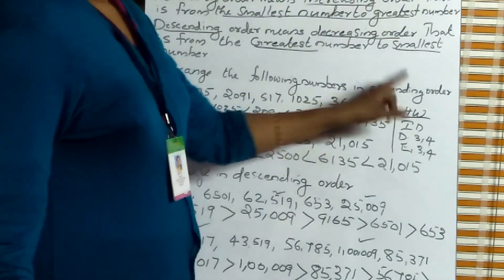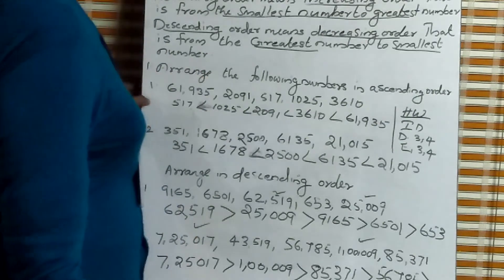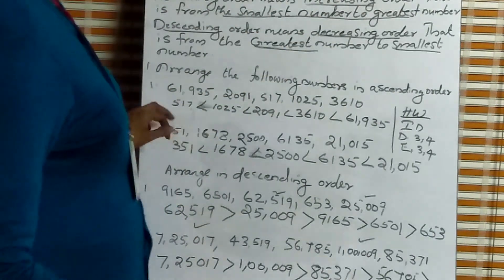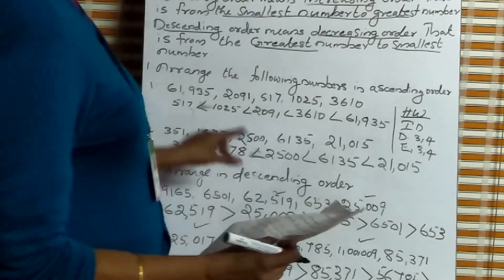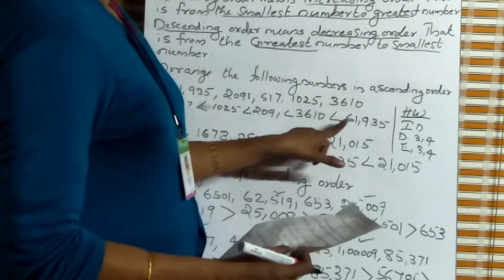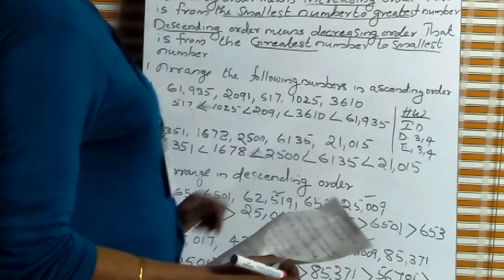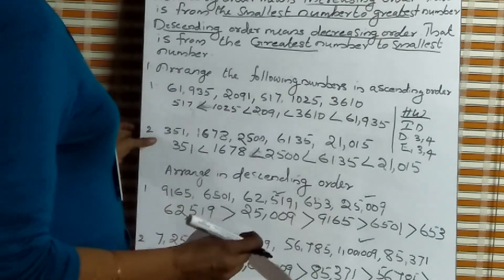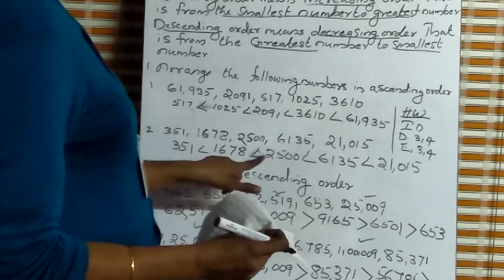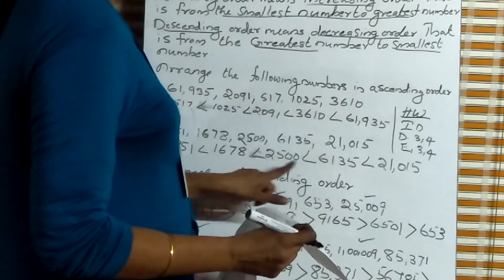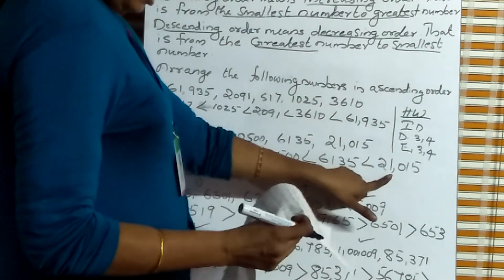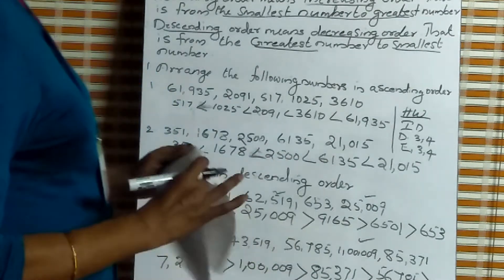Listen once more. Arrange the following numbers in ascending order. Ascending order means the smallest number to greatest. First answer: 517 less than 1,025 less than 2,091 less than 3,610 less than 61,935. Second answer: 351 less than 1,678 less than 2,500 less than 6,135 less than 21,015.